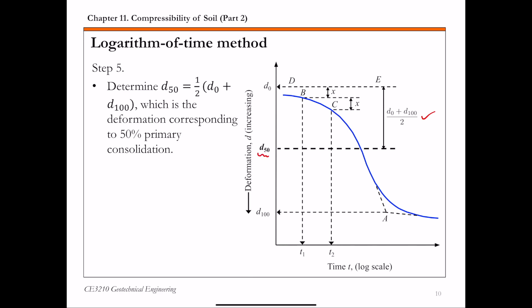Once you get this d50, the time corresponding to d50 on this consolidation curve is what we call t50, basically the time it takes for the soil to reach 50 percent consolidation.